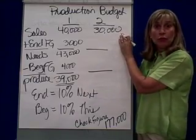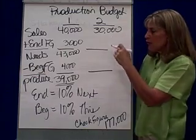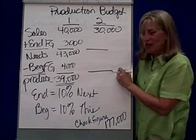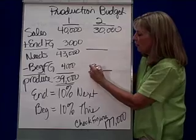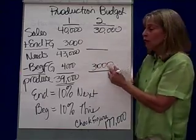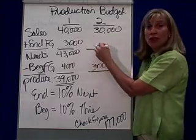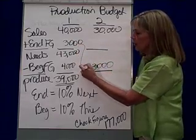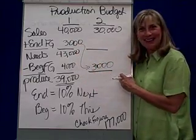In the second quarter, we are going to sell 30,000. So that means the beginning finished goods for this quarter are 3,000, or 10% of that amount. Another way to check it: notice that ending inventory for the first quarter becomes the beginning inventory for the second.